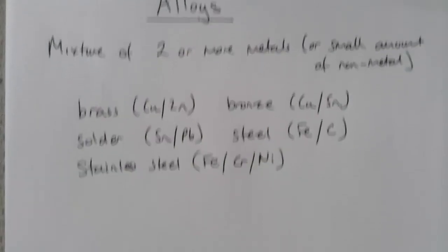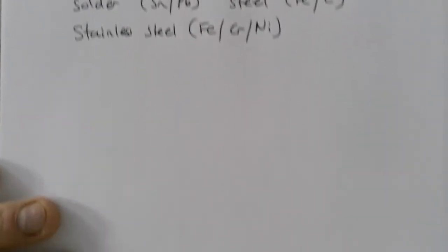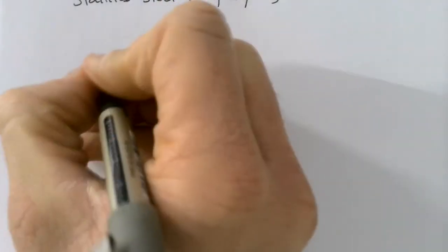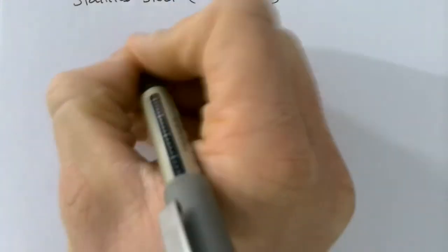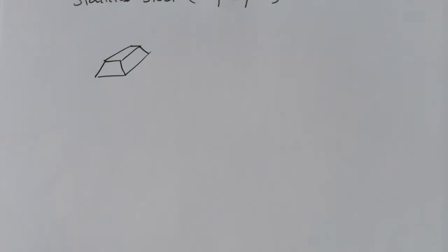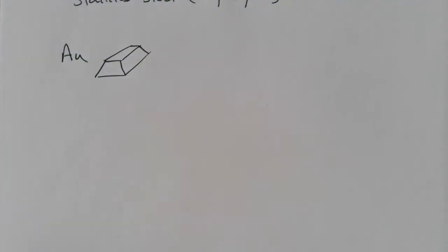Let's think about their properties. Because alloys have different properties to pure metals. A really good example of this is gold. Here's a bar of gold, which we're going to give this symbol AU.